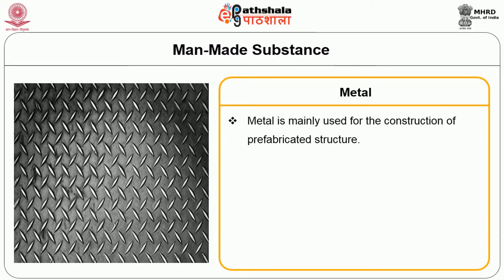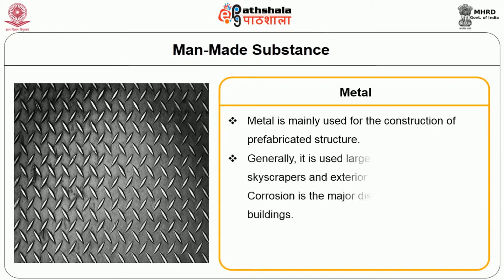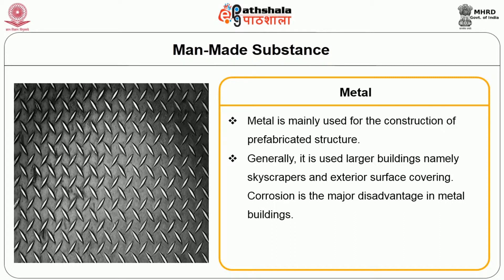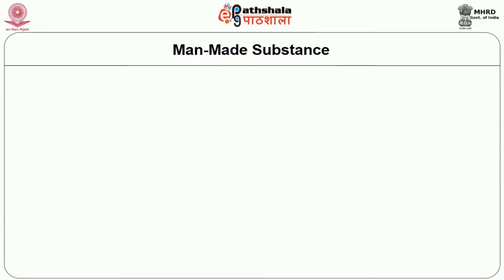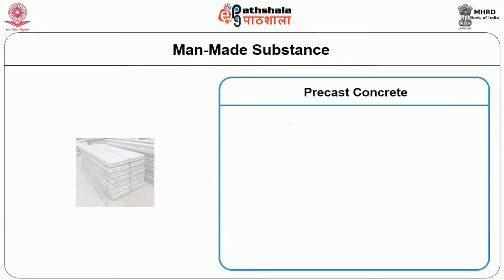Next is metal. Metal is mainly used for the construction of prefabricated structures. Generally it is used in larger buildings, namely skyscrapers and exterior surface coverings. Corrosion is the major disadvantage of metal buildings, but it can be avoided by using a steel alloy which combines steel with aluminum, zinc, tin, etc.